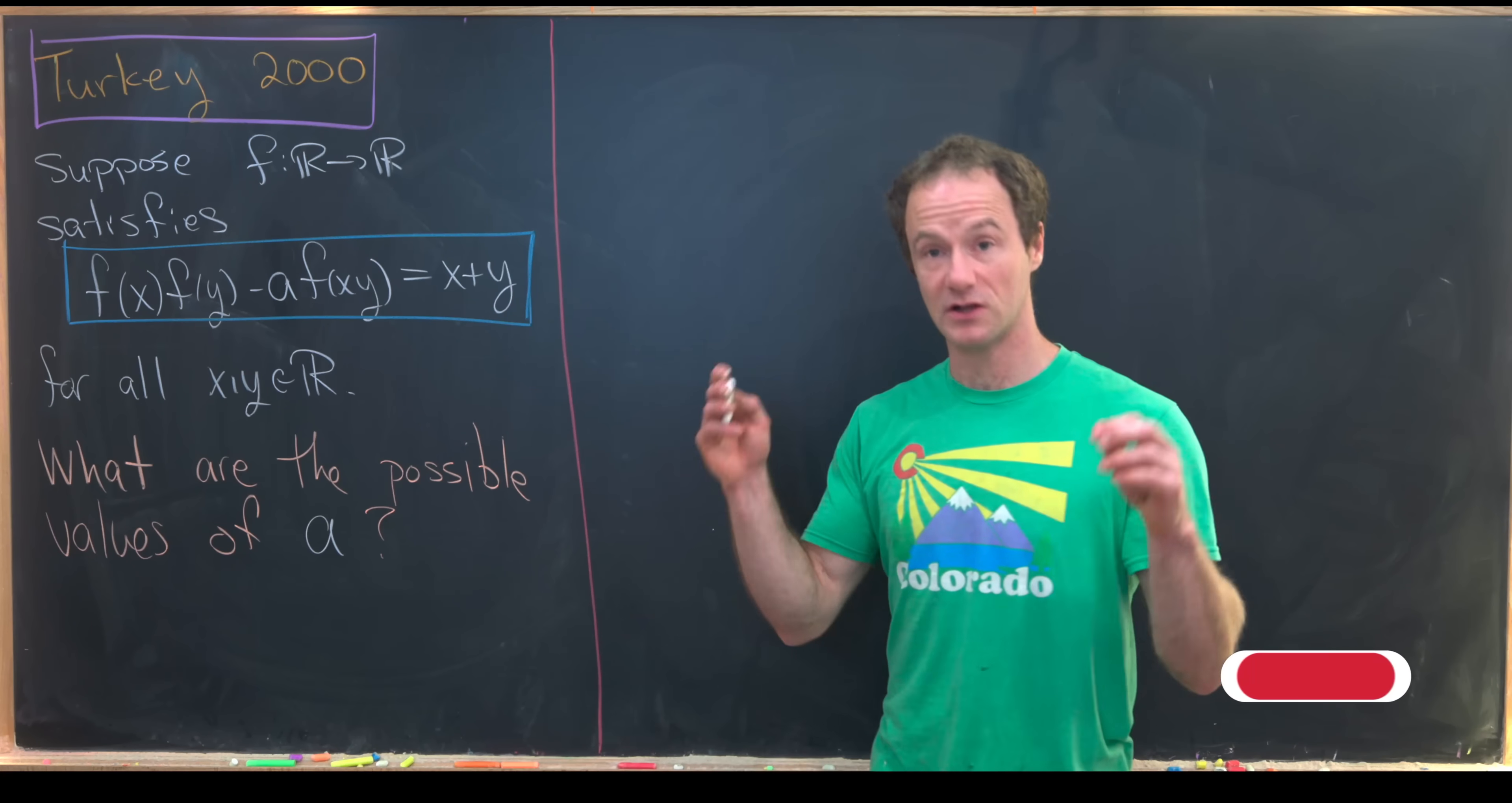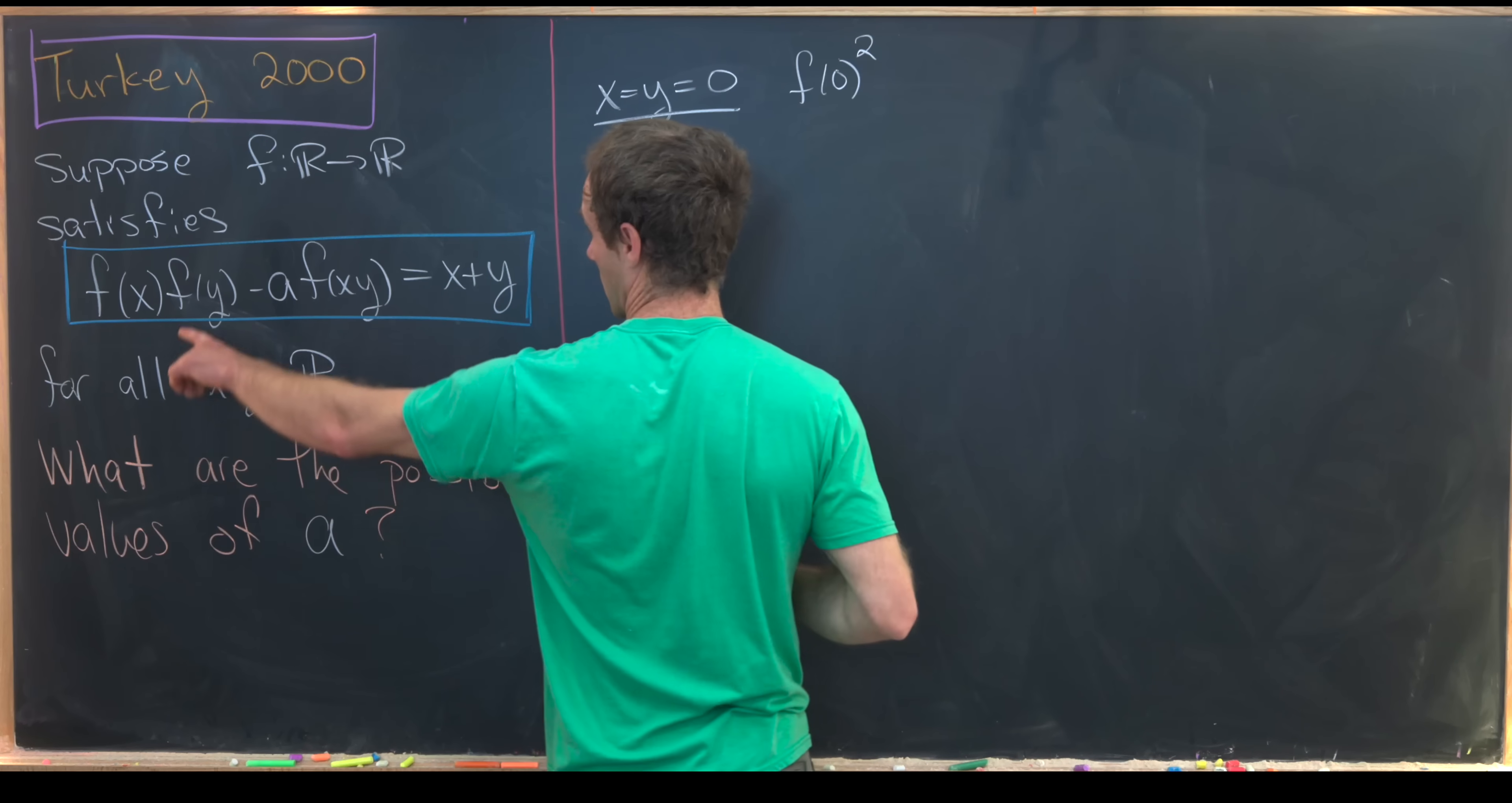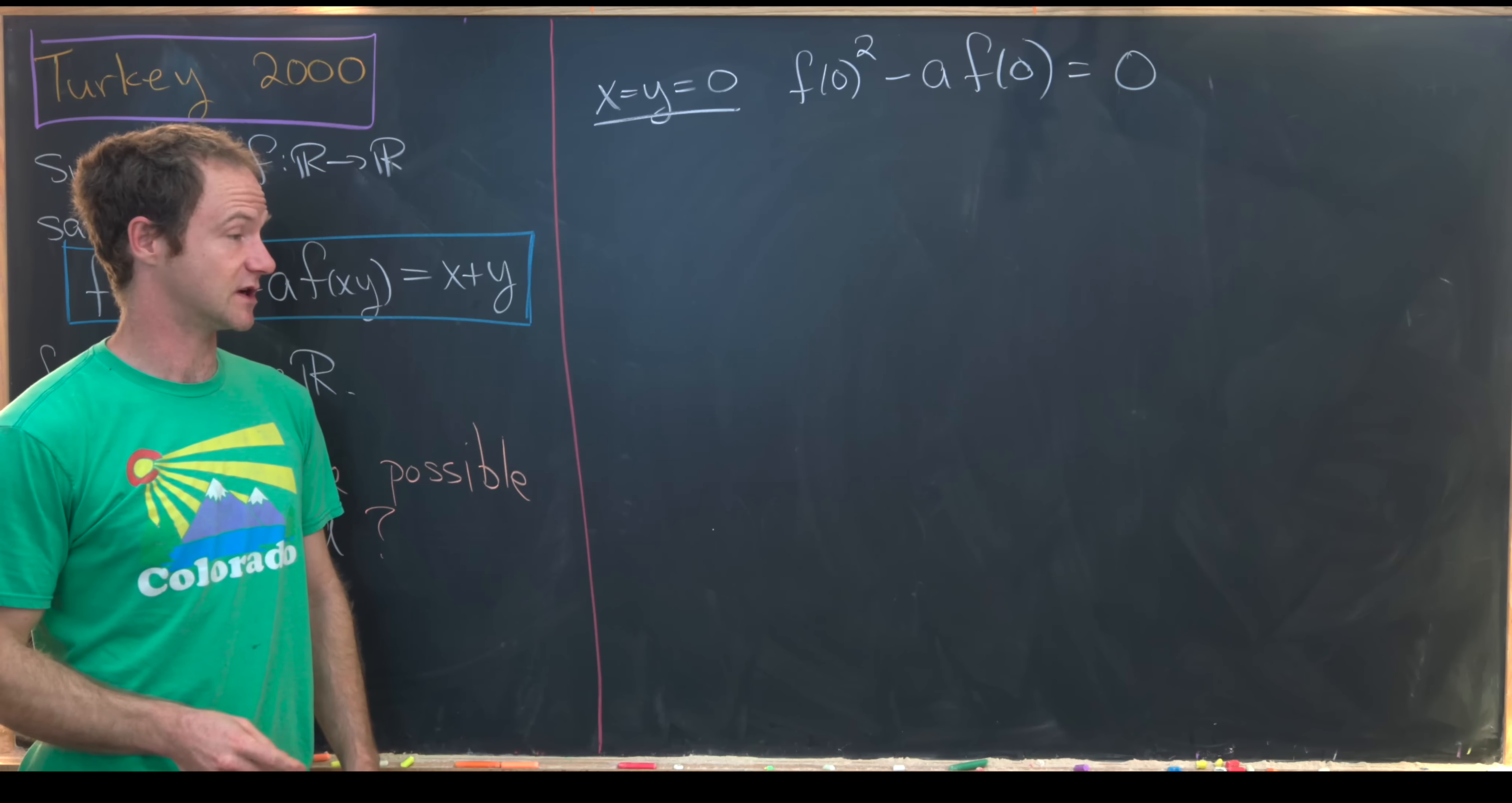We're going to start off with the lowest hanging fruit, and that would be plugging in x equals y equals zero. So let's see what happens if we plug x equals y equals zero into this situation. That's going to give us f(0)^2, so that'll be this guy right here, minus a times f(0), so that's what we get from this, equals zero plus zero. So we get that from that. But zero plus zero is obviously zero.